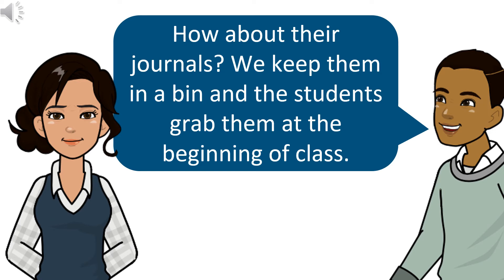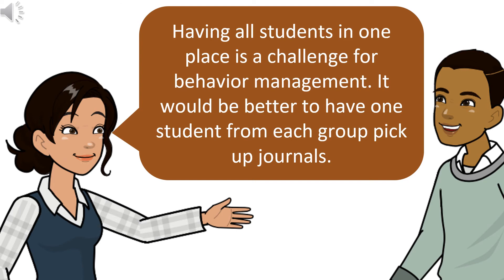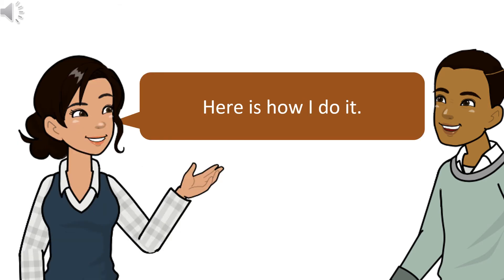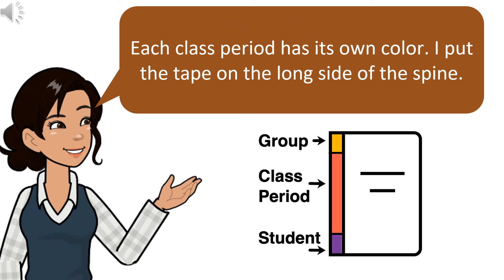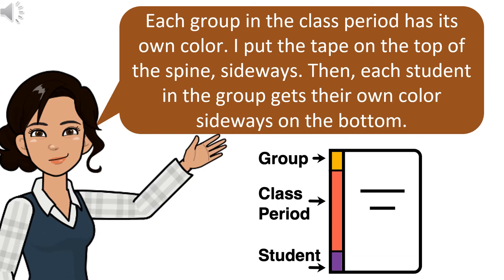How about their journals? We keep them in a bin and the students grab them at the beginning of class. Having all students in one place is a challenge for behavior management. It would be better to have one student from each group pick up journals. I use duct tape to visually classify the notebooks so students can quickly identify the notebook all the way down to the student level. Each class period has its own color — I put the tape on the long side of the spine. Each group in the class period has its own color — I put the tape on the top of the spine, sideways. Then each student in the group gets their own color sideways on the bottom.